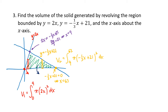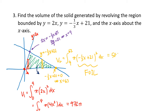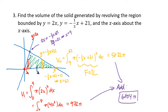Now to evaluate these integrals, we need some algebra. Squaring 2x gives 4x squared, so V1 is straightforward. For V2, we FOIL the expression negative one-third x plus 21 squared, just like the previous example. After integrating, V1 works out to be 972π and V2 works out to be 5832π. Adding those together, the total volume is 6804π cubic units.